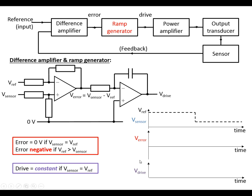Looking at the graphs, we've got V sensor, V error, and V drive — I've separated out V error and V drive and we'll see why once we get into the graphs. To start with, let's say the sensor is at 0: for motor speed control it's not turning at all. The error, which is the difference between these two, is now negative, which means the ramp generator is going to be driving the drive signal upwards. As the motor turns it gets faster and faster so V sensor rises, but as it gets closer to V ref the error signal gets closer to 0, and the aim of the circuit is to get the error signal to be 0, at which point the drive signal becomes constant.